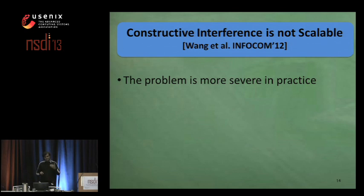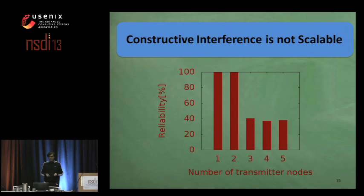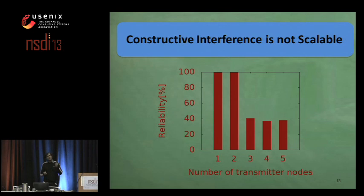While the recent work is theoretical, our real-world examples demonstrate that the problem is more severe in practice. As depicted, only three concurrent transmitters is enough to degrade reception reliability to a low value of 40%.